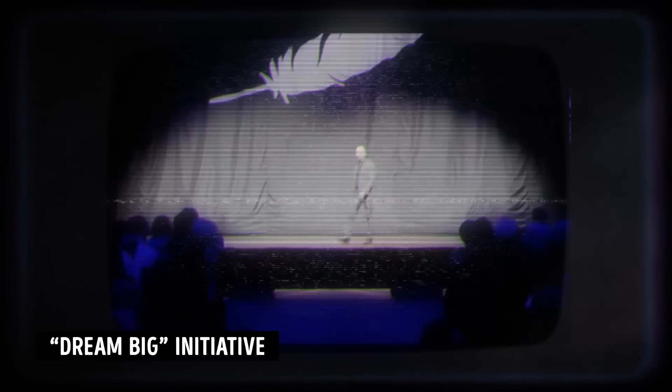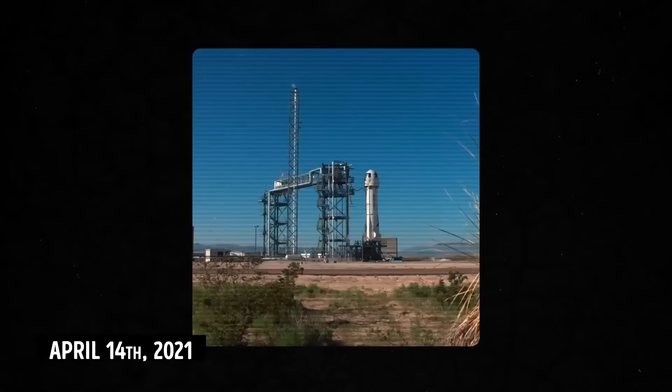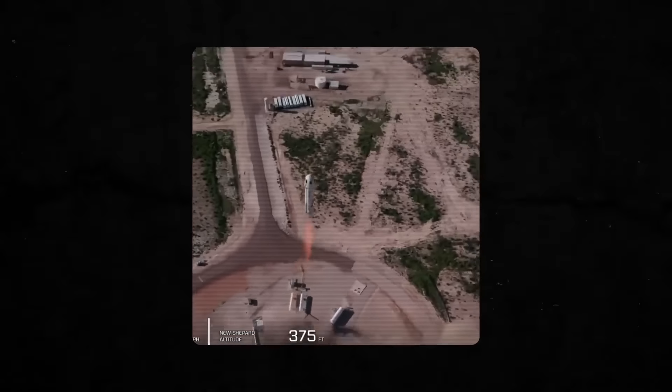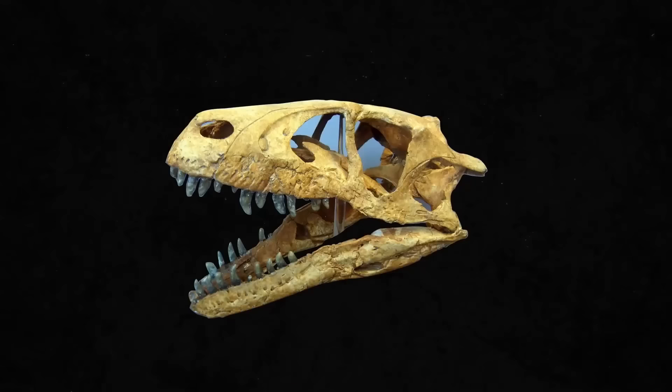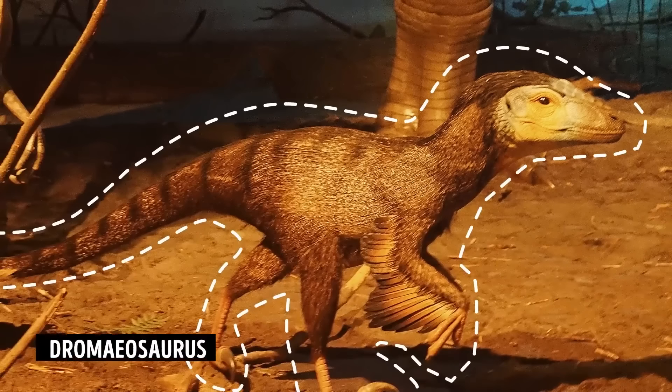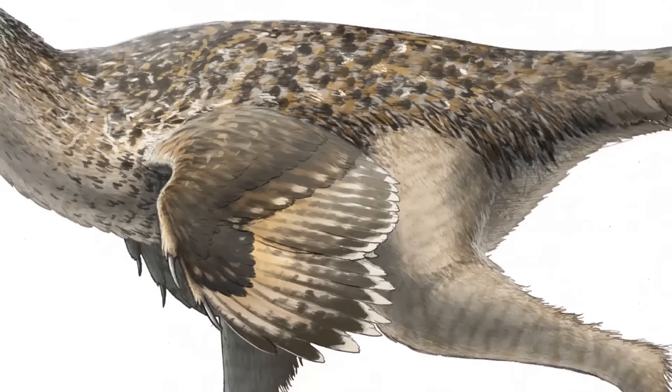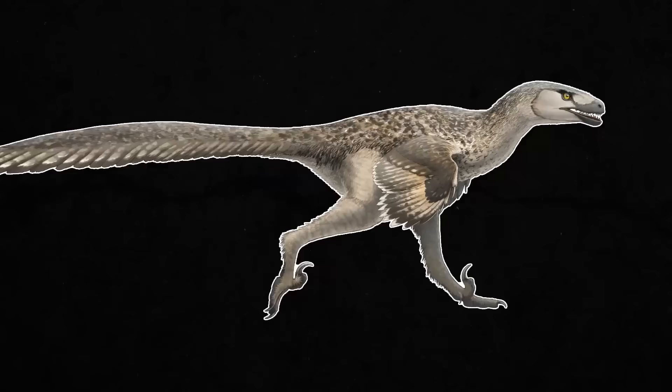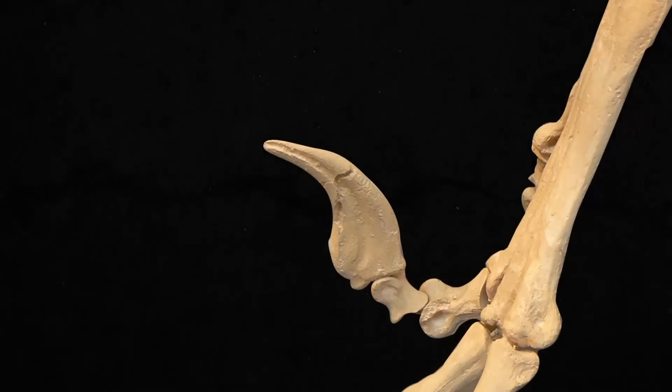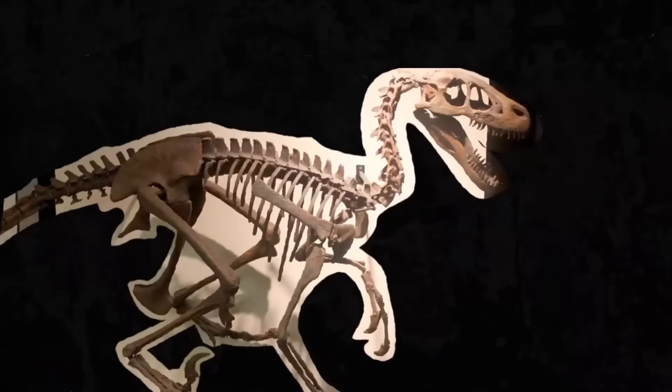Well, guess what? Blue Origin, the company owned by Jeff Bezos, has sent dinosaur bones to outer space. Can you believe it? Why? Well, it's all part of their Dream Big initiative to inspire people, especially students, to reach for the stars. On April 14, 2021, they launched almost 200 pieces of dinosaur bones into space using their new Shepard rocket. These bones are super old, like between 66 million and 70 million years old. They were fragments from a dinosaur called a Dromaeosaurus, which was part of a raptor family. It was kind of like a bird, but also a fierce hunter. It was about 7 feet long and had sharp claws on its feet. These guys were really good at hunting and slicing into their prey.